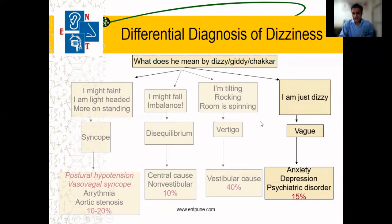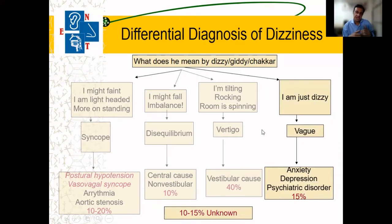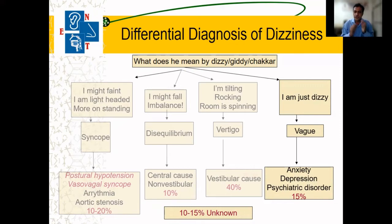Besides this, there can be hypotension, syncope, systemic conditions like low blood sugar, or cardiac conditions — these can also lead to vertigo and we need to be careful. Despite knowing all this, 10–15% of patients are still ones in whom we cannot diagnose the exact cause of vertigo.